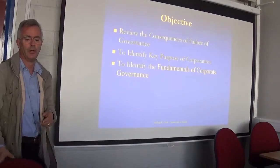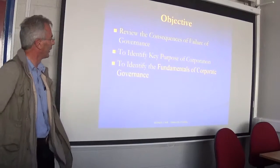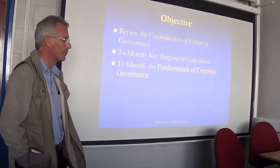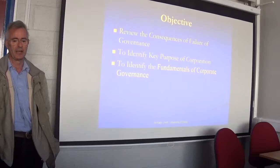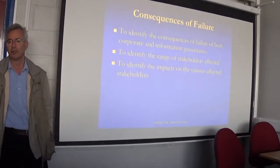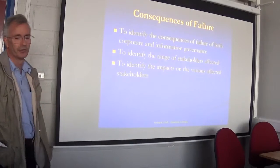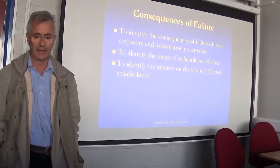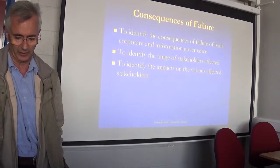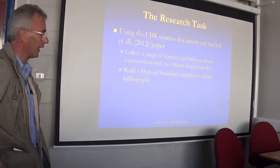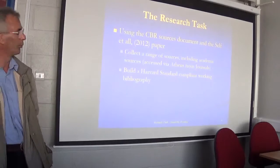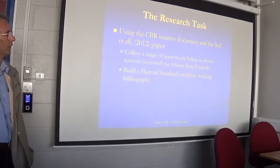The first thing I want to do, when I finish this session with my input, is go back and look at what you have come up with during the week in your research into the consequences of failures of governance. I'm going to move on into identifying the key purpose of a corporation. What are the consequences of failures in terms of both corporate governance and information governance? Who are the various stakeholders who are affected and in what ways? You were using CBR and other sources to find lots of examples of corporate and information technology governance failures.